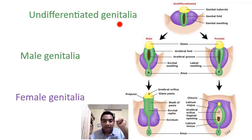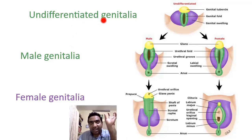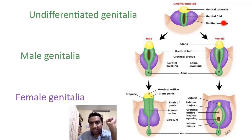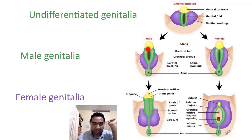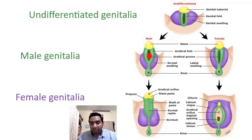Coming to the stage of undifferentiated genitalia: the genital system and urinary system develop in parallel. The undifferentiated genitalia has a genital tubercle, genital fold, and genital swellings. In females, the genital swellings become the labia majora, the genital folds become the labia minora, and the genital tubercle becomes the clitoris. In males, the genital folds become the shaft of the penis, the genital swellings become the scrotum, and the genital tubercle becomes the glans penis. The urethra slowly develops by cannulation in the genital fold.